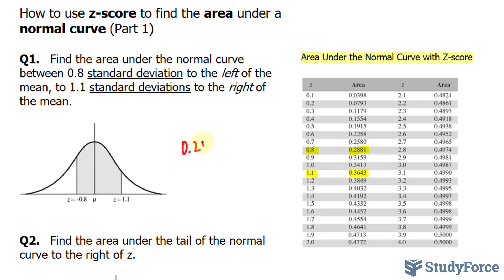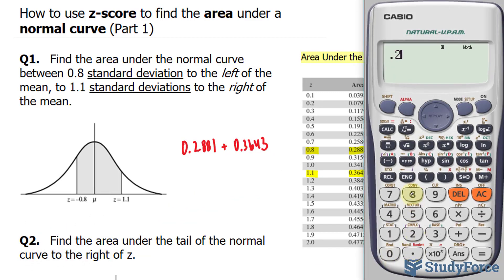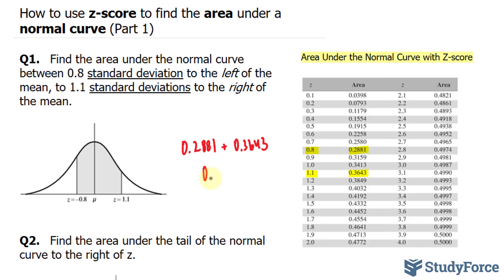0.2881 plus 0.3643 using our calculator, and this gives us 0.6524. And of course you may write this as a percentage, so your final answer could be 65.24%.